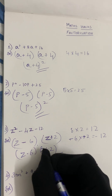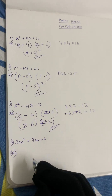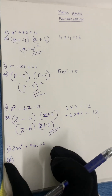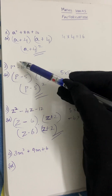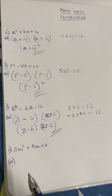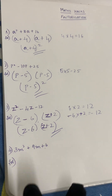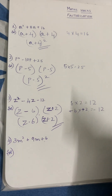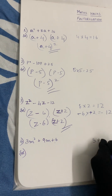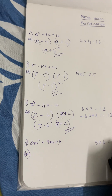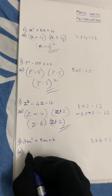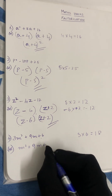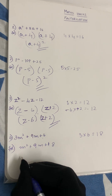Now let's solve the last question: 3m squared plus 9m plus 6. This is a little different because we have a coefficient 3 with m squared. The first step is to multiply 3 into 6, which gives 18. We remove the 3 and rewrite it as m squared plus 9m plus 18.